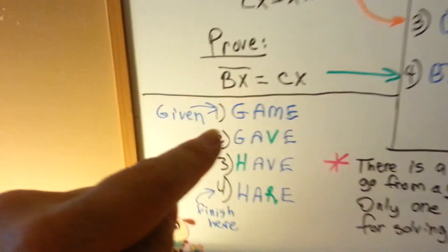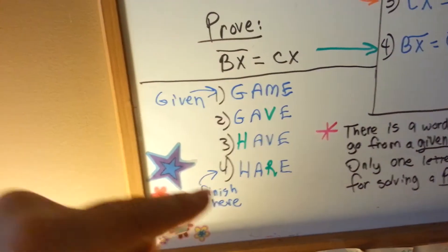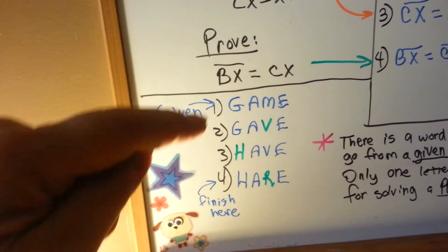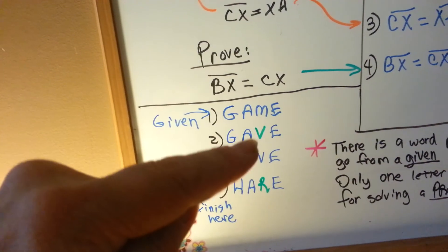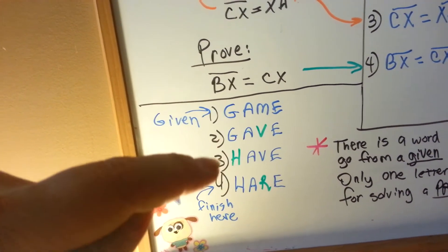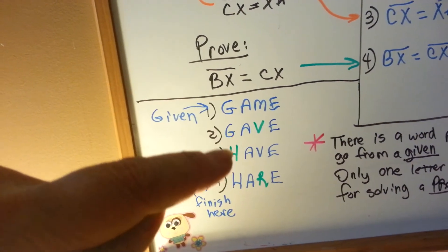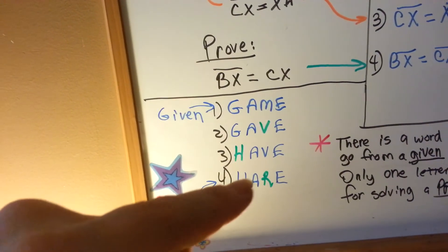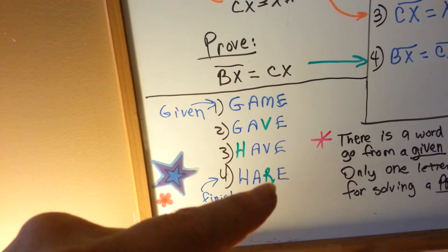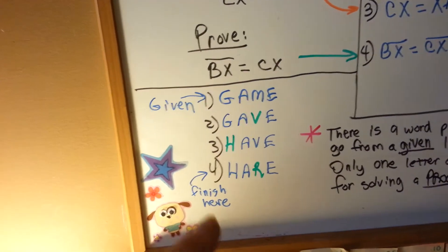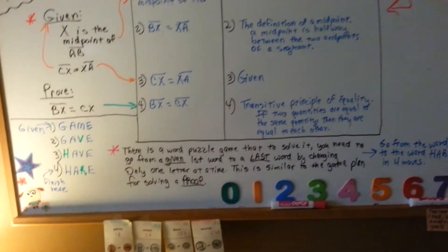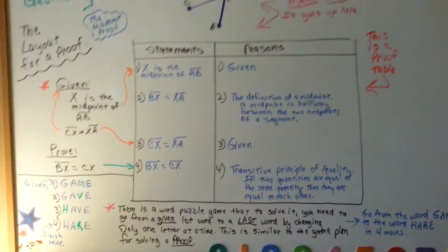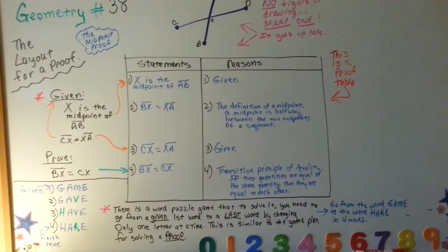Well, the given is game and we need to get to hair. So, I would change one letter at a time. I would change the M to a V and then the next move I would change the G to an H. Then the next move I would change the V to an R and then I would have the word hair and I'd be finished. And I did it in methodical, logical order. And that's pretty much the same thing you do with a proof.